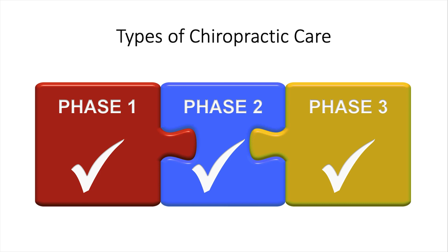Phase two is the corrective care phase, where we're making structural changes and working in and around ligaments and disc problems — that's where the spinal biomechanical engineering principles come into place. Phase three is the health maintenance phase, where the patient is at maximum improvement but will maintain their health through frequent visits to the chiropractor.